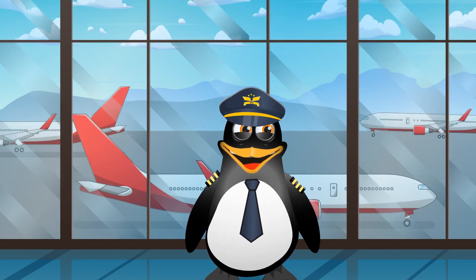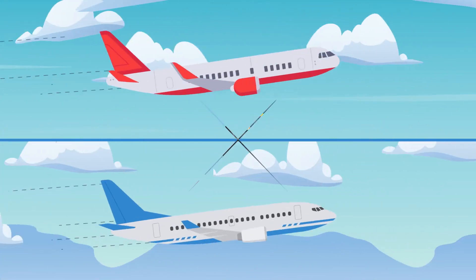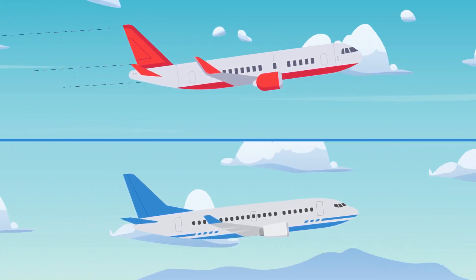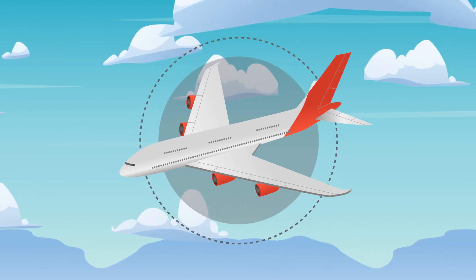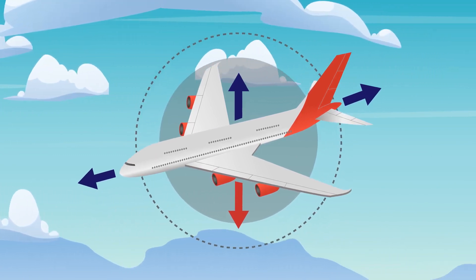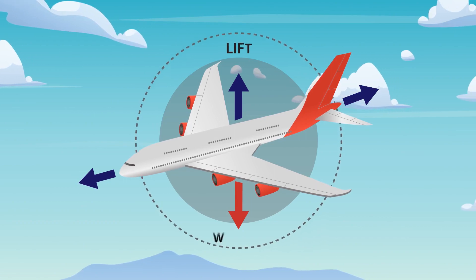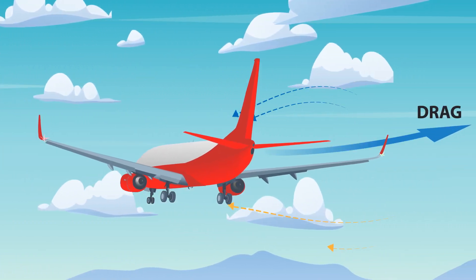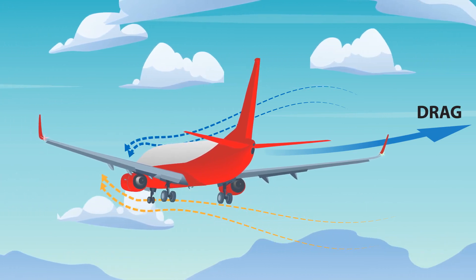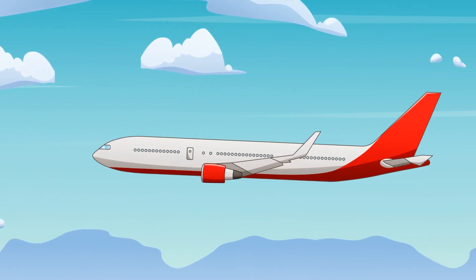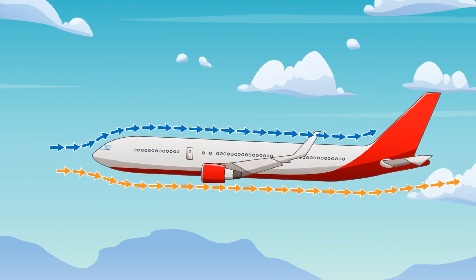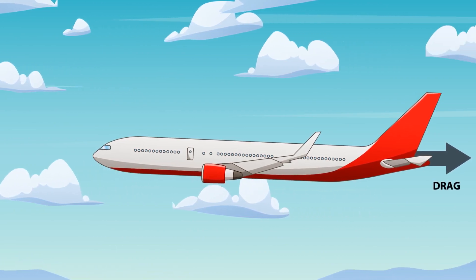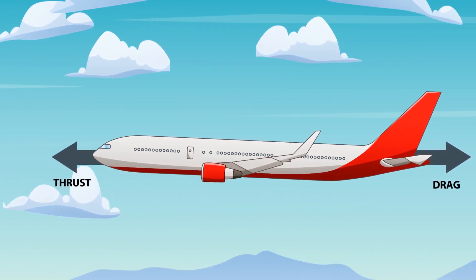When we understand drag, we can better manage it — both in how aircraft are designed and how we fly them — in order to fly farther, faster. In aerodynamics, four primary aerodynamic forces affect aircraft in flight: lift, weight, thrust, and drag. Drag refers to forces that resist the motion of an aircraft through the air. Drag acts parallel and in the same direction as the relative airflow, opposes the motion of the object, and in an aircraft is itself opposed by thrust created by the aircraft's engine.